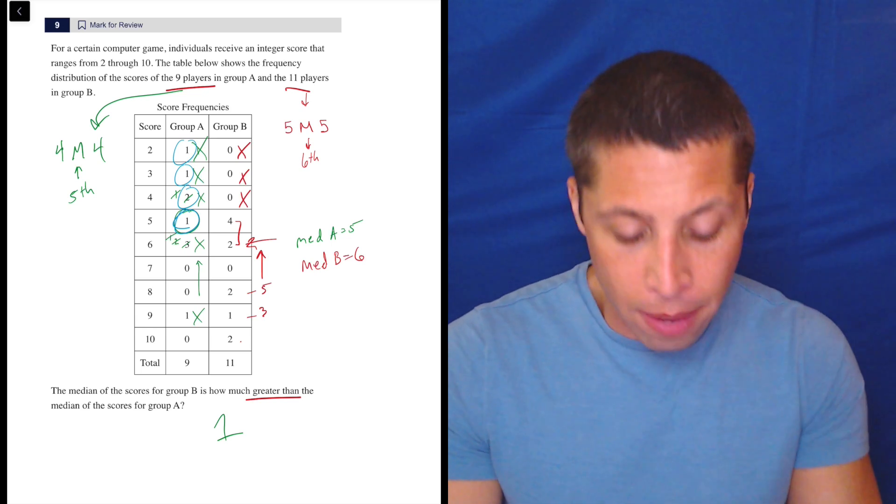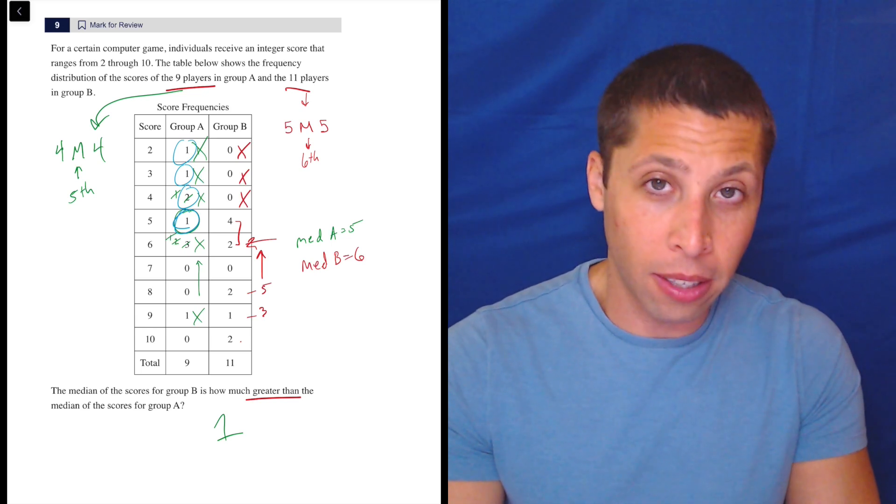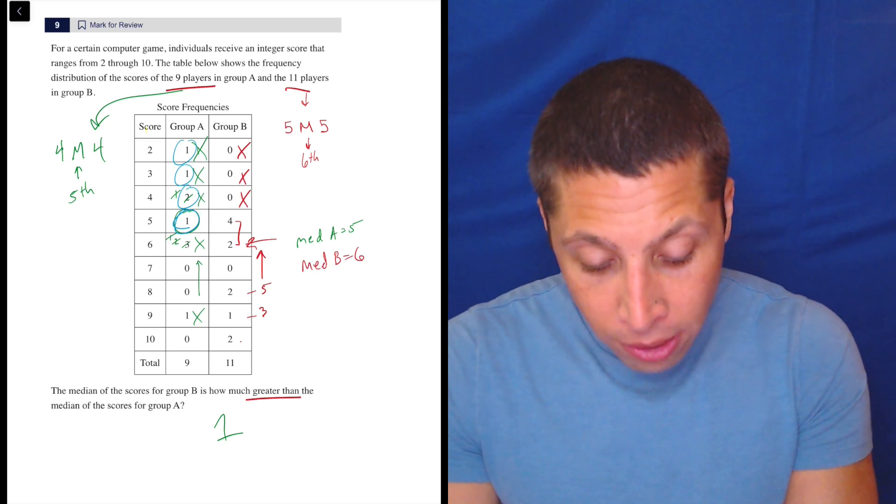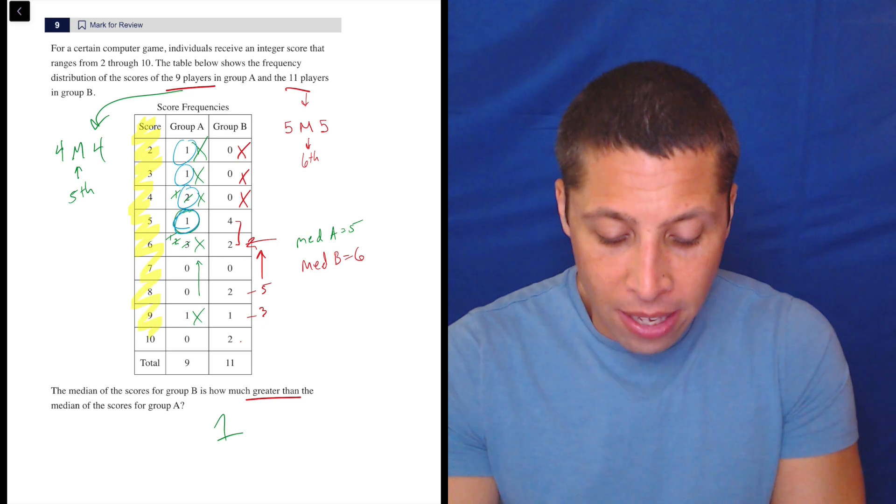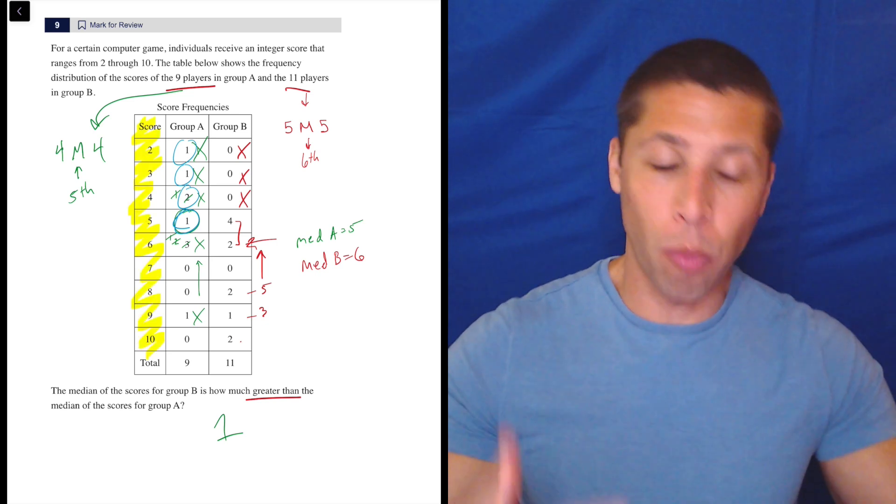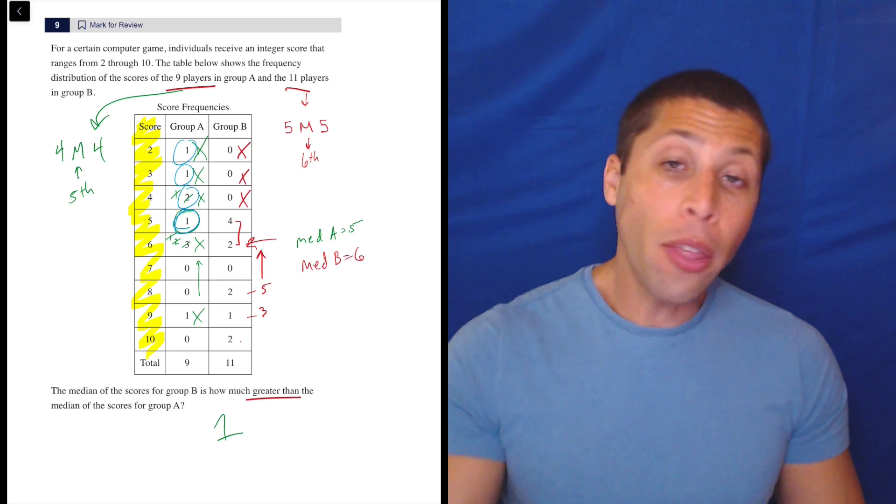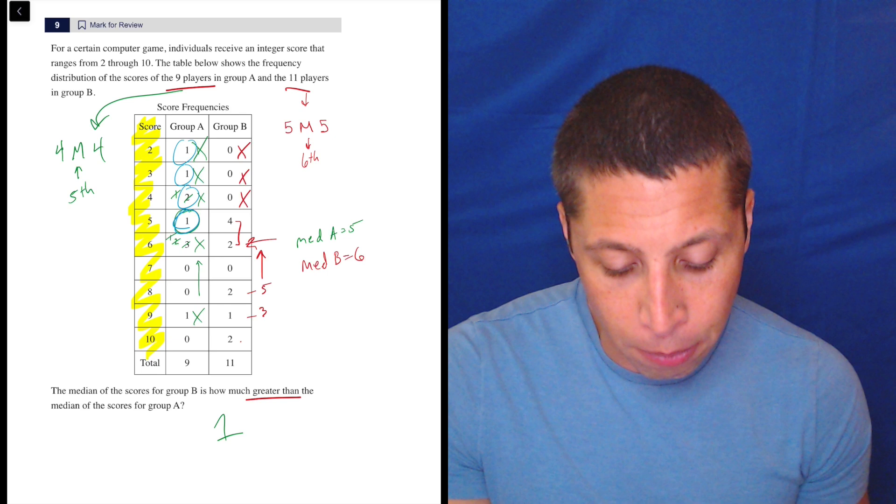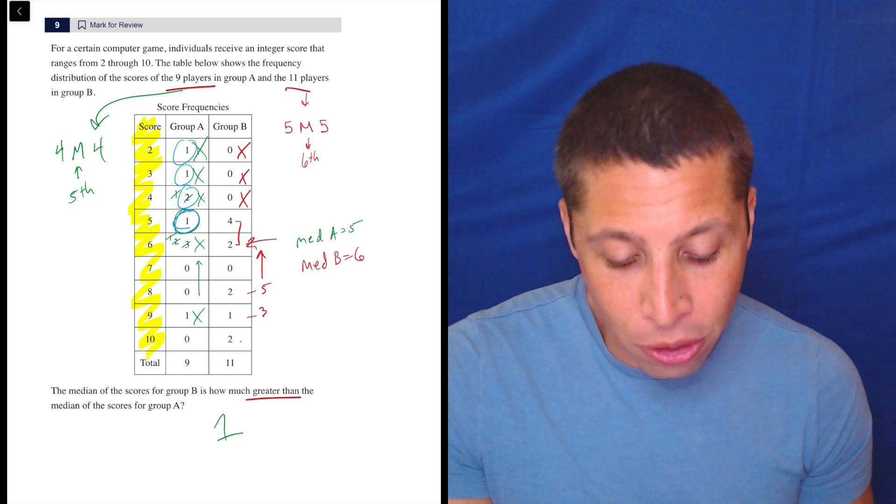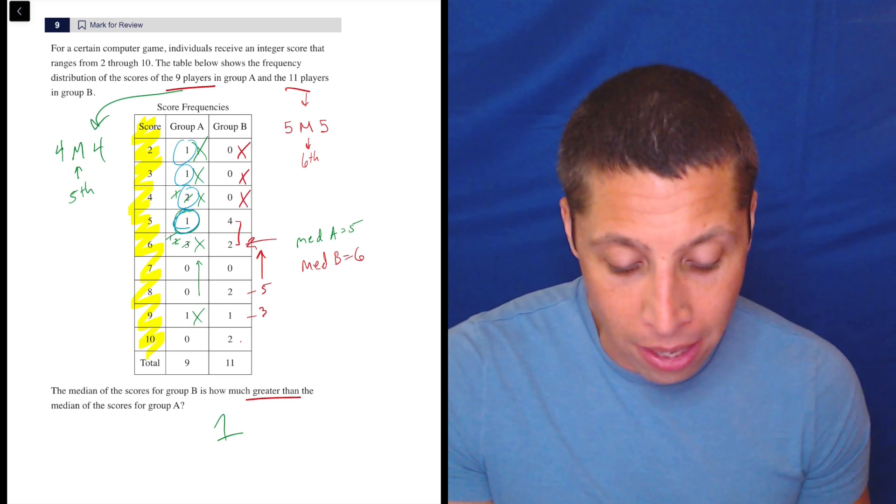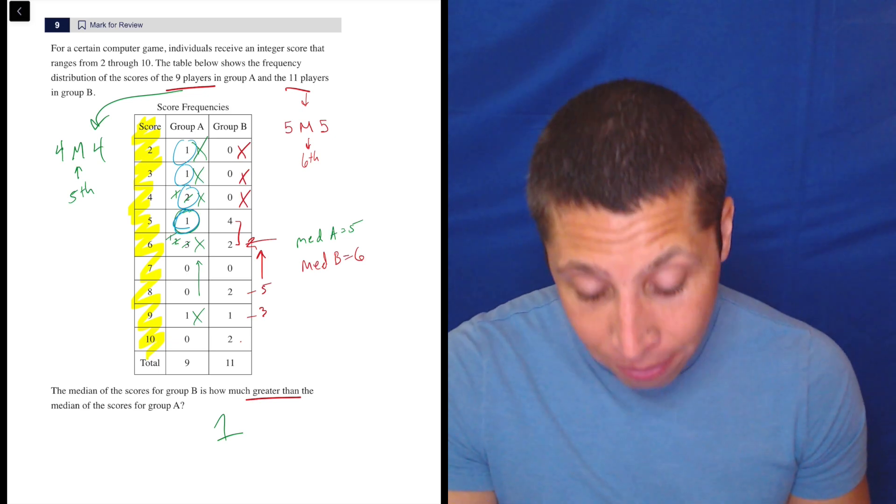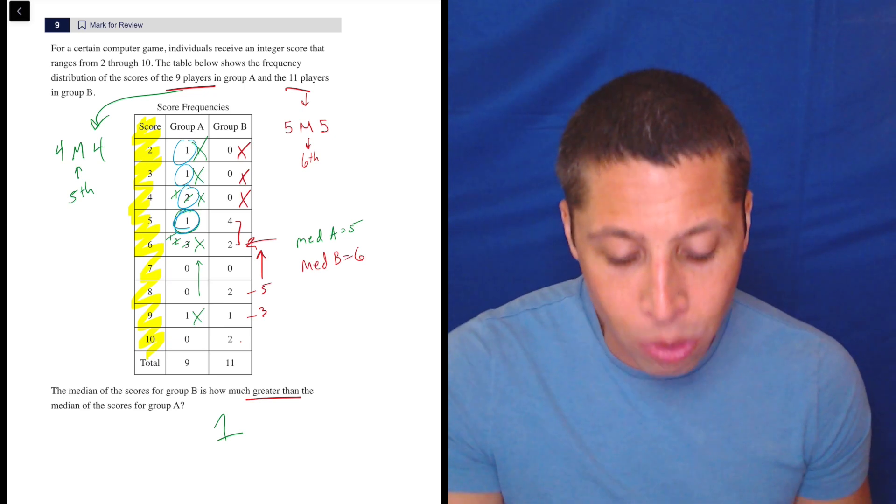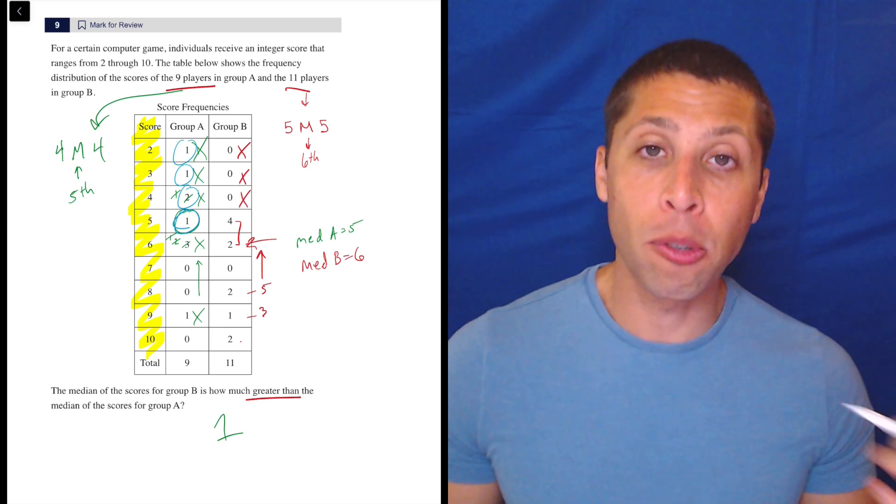The key is in both of these cases, I was working in the rows, the columns for group A and group B, but what I really am interested in is the score. The numbers themselves that we're actually thinking about when we're finding the median, or if we wanted to find the mean. The other columns are the frequencies. For example, there's 0 twos in group B, 0 threes in group B, 0 fours in group B, but there's 4 fives in group B, 2 sixes in group B, 2 eights in group B, and a 9 and 2 tens. So we have to think of all those frequencies and take them into account.